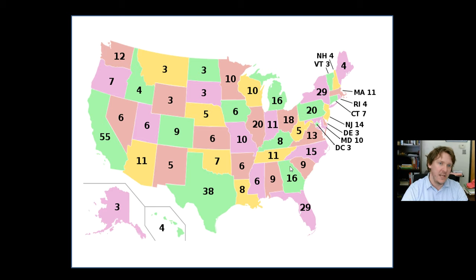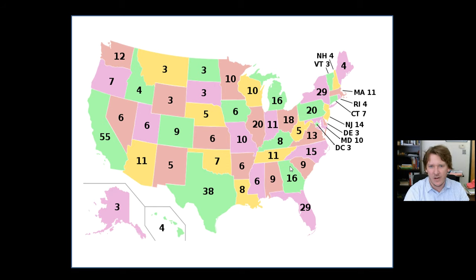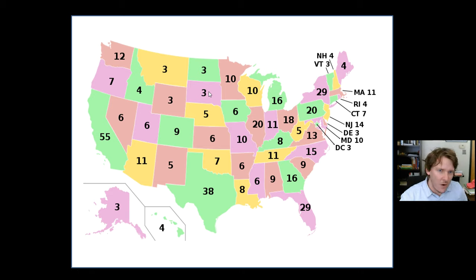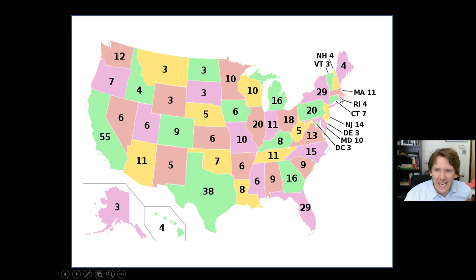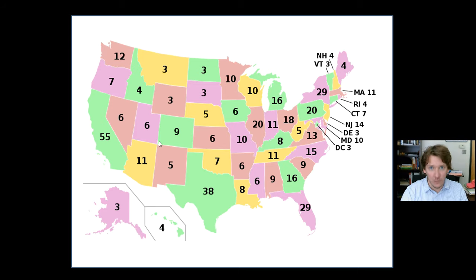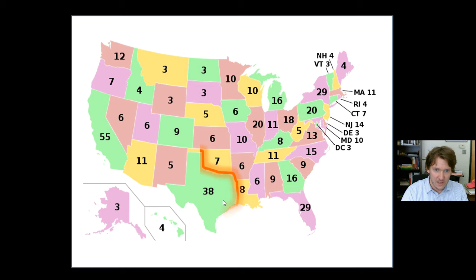This is the Electoral College map — you're looking at all the states in the United States and seeing the different point totals each state receives. You might wonder why California gets 55 points, Texas gets 38 points, and Wyoming only gets 3 points. It can't be geographic size because Montana is big but gets 3 points, while Connecticut gets more. It's population-based. These numbers are based on the amount of people that live in a state. More people in your state means more influence in electing the president. California gets 55 points, Texas gets 38.